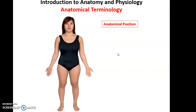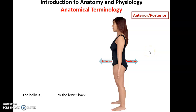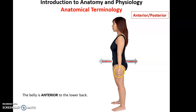When comparing the location of different structures of the body, we use anatomical directional terms, and they come in pairs. The first pair is anterior and posterior. Anterior means toward the front of the body; posterior means toward the back. So the belly is anterior to the lower back — the belly is closer to the front of the body than the lower back is.